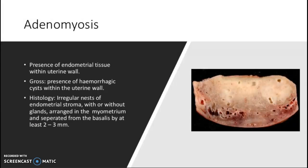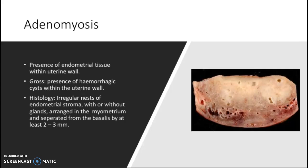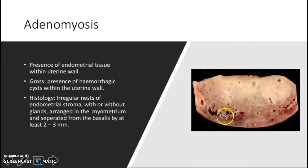Adenomyosis is defined as the presence of endometrial tissue within the uterine wall. Grossly, it presents as hemorrhagic cysts within the uterine wall. Histologically, you will see irregular nests of endometrial stroma with or without glands arranged in the myometrium, separated from the stratum basalis of the endometrium by at least 2 to 3 mm. In this picture, the cystic hemorrhagic parts are clearly far from the endometrial layer — this is adenomyosis.